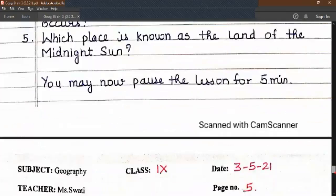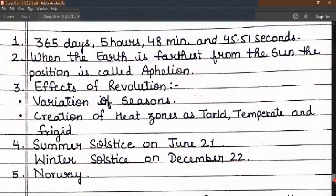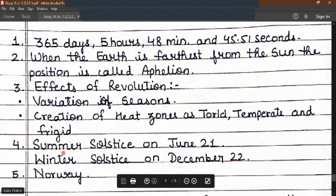Now the answers to the above questions are: 365 days, 5 hours, 48 minutes, 45.51 seconds. This is the actual time earth takes to complete one revolution, 365 days and almost 6 hours. Number two, when the earth is farthest from the sun, the position is called aphelion. Number three, the effects of revolution are: variation in seasons, creation of heat zones such as torrid, temperate and frigid. Number four, summer solstice on June 21st and winter solstice on December 22nd. Number five, Norway.